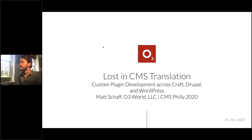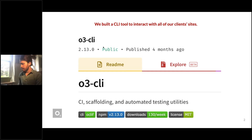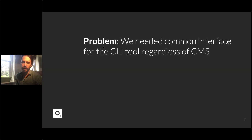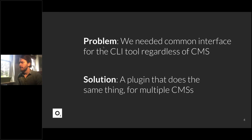Very recently, O3 built a CLI tool — a command line interface tool — to interact with all of our clients' sites. It's called O3 CLI. It does a lot of things, but one of them is visual regression tests against all of our clients' websites. That required us to solve this problem: we needed a plugin that does the same thing for multiple CMSs regardless of CMS.